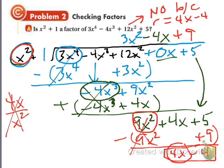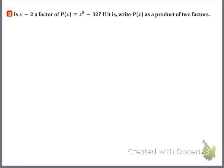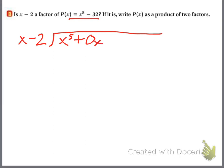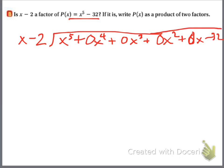When they ask you if a binomial is a factor of something, do long division and you're hoping to get a remainder of 0. Last one: is x minus 2 a factor of that polynomial? Again, this is sort of the same thing. Look here — I've got x to the 5th minus 32. I literally have no other variables. So I have to account for that: 0x to the 4th plus 0x to the 3rd plus 0x squared plus 0x minus 32. You have to have placeholders for every single exponent. If it's not in the original function, you've got to put a 0x to whatever.